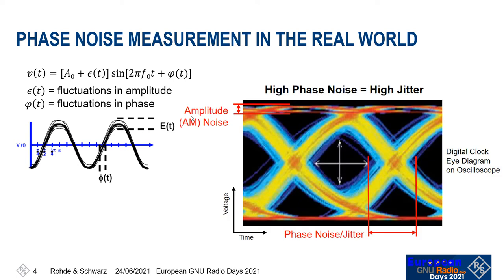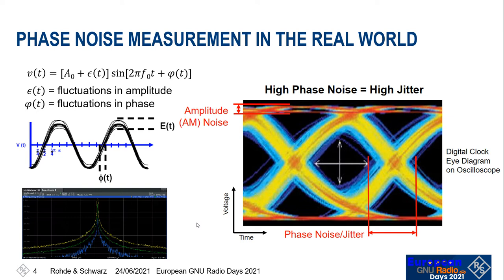If we were to look at that in the time domain — let's say we were running a square wave signal into a scope — we would see the amplitude noise as a broadening of the trace in a vertical sense. And as we look at the square wave overlays, we would see the jitter manifesting itself in a larger crossing. If we look at this in the frequency domain, we see distortions around the carrier, and as these distortions increase, we can see the noise traces increasing as well.